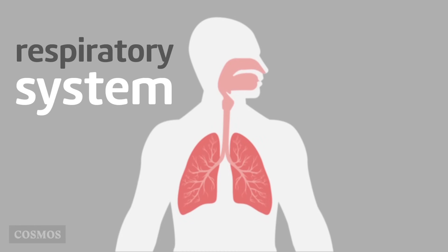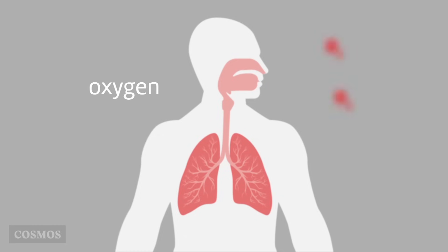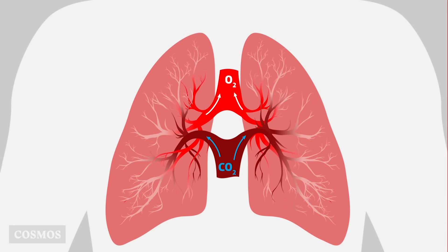The main function of the respiratory system is to provide oxygen from the air and remove carbon dioxide into the air. This takes place in the lungs, with the gases carried to and from the cells by the bloodstream.